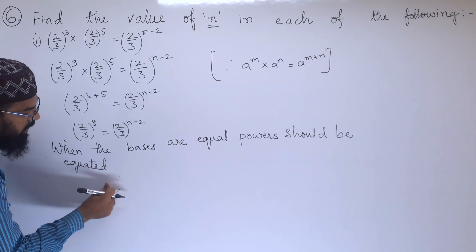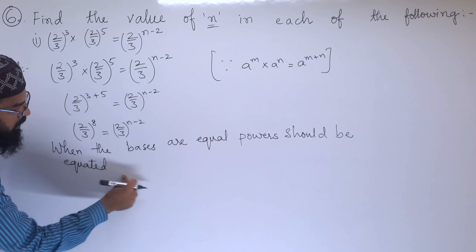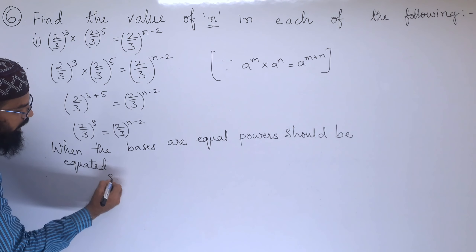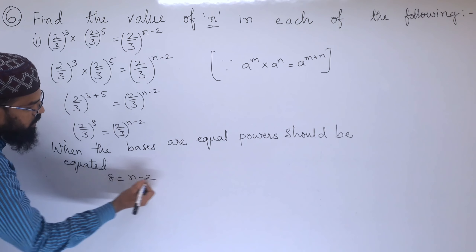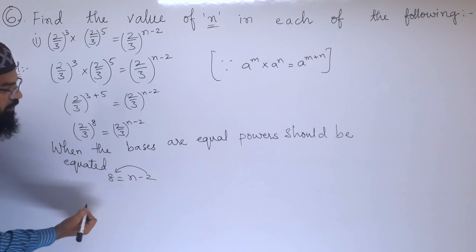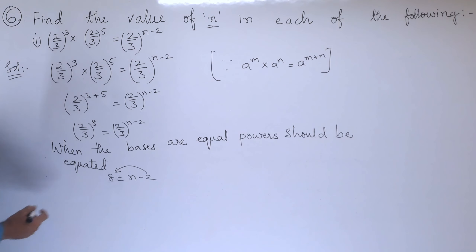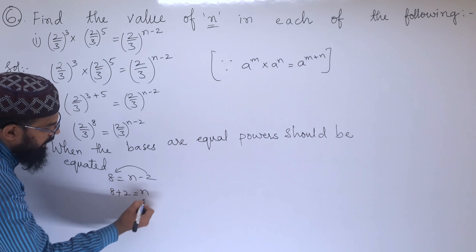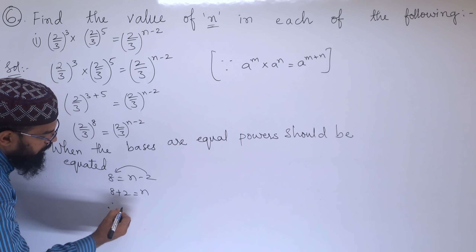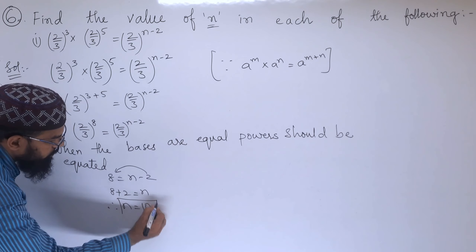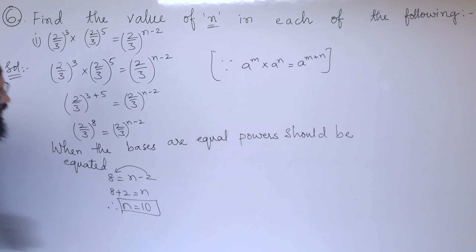When the bases are equal, we equate the powers. So 8 = n - 2. The 2 comes to this side and becomes positive, so 8 + 2 = n. Therefore, the value of n is 10.